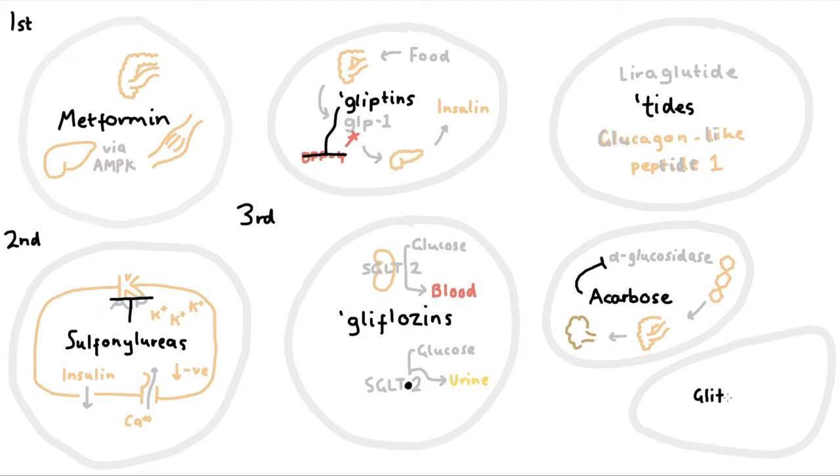Okay, and lastly, the glitazones, which also go by the unpronounceable name of thiazolidinediones or TZDs. I'm never going to say that again. These activate a nuclear receptor which promotes transcription of genes relating to metabolism of carbohydrates, the utilization of energy. So they encourage cells to use glucose for their oxidative purposes, thereby reducing the amount in circulation. The glitazones were shown to have an association with increased fluid retention and have thus fallen out of favor a few years ago.